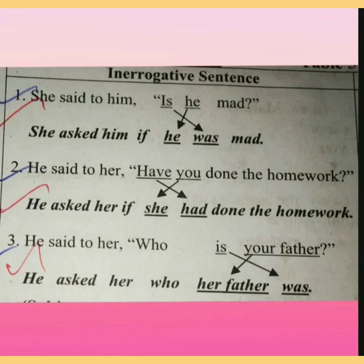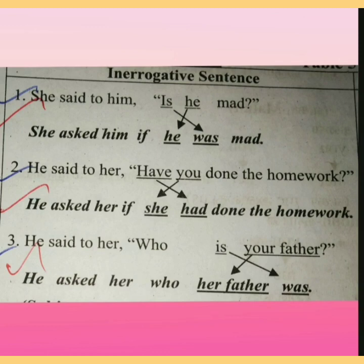Next type: interrogative. Example — 'She said to him, is he mad?' In indirect speech, 'said to' changes to 'asked.' The answer is: 'She asked him if he was mad.' When converting interrogative sentences, present tense changes to past tense. Simple present changes to simple past. Another example: 'He said to her, have you done the homework?' The answer: 'He asked her if she had done the homework.' 'Have' changes to 'had' — present perfect changes to past perfect.